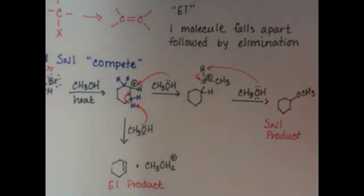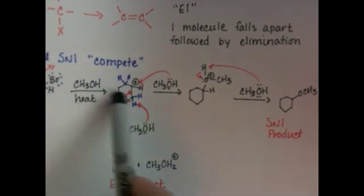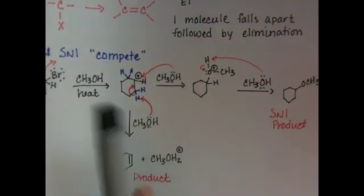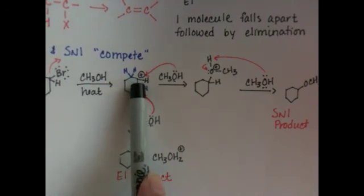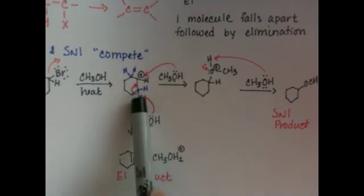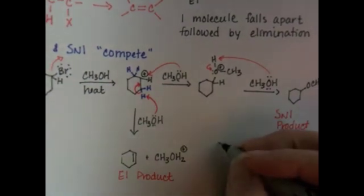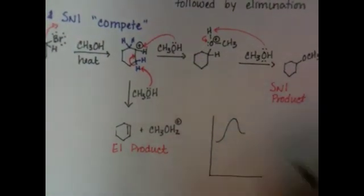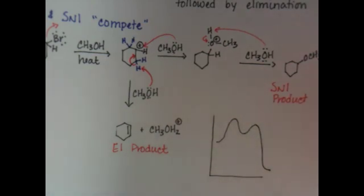This is a two-step reaction, just like the SN1 reaction is a two-step reaction. Step one is the formation of the carbocation intermediate; step two is the abstraction of the proton and the formation of the double bond. We can draw an energy diagram that has two steps: formation of the carbocation, then abstraction of the hydrogen to make the double bond.